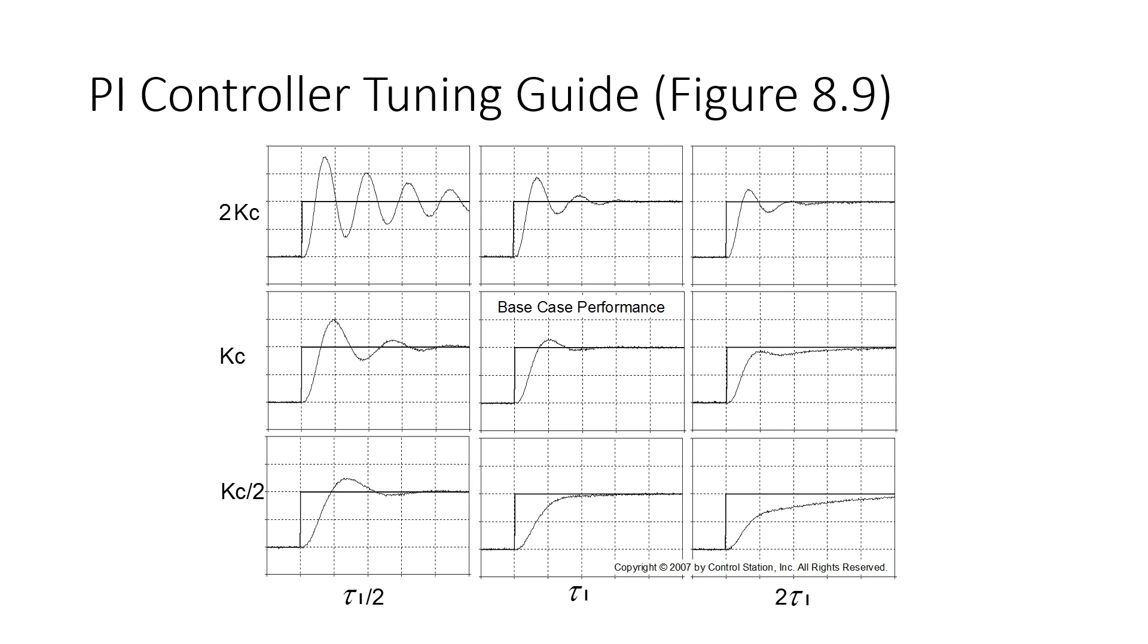This is just a grid that shows the value of Kc and tau I. In this case, I'm increasing the value of tau I. But as you remember, the tau I is in the denominator for the integral term. And so as I increase this, this whole term gets smaller.